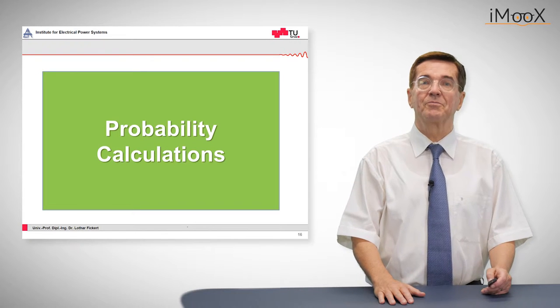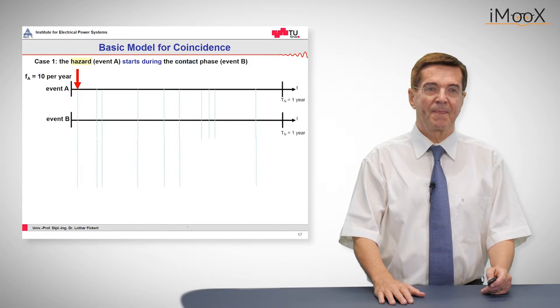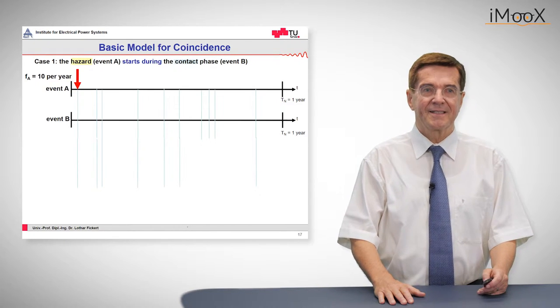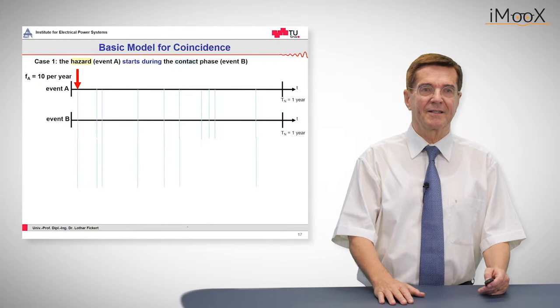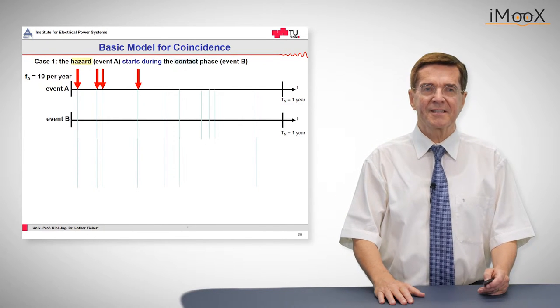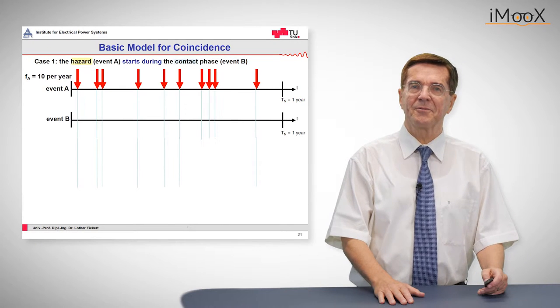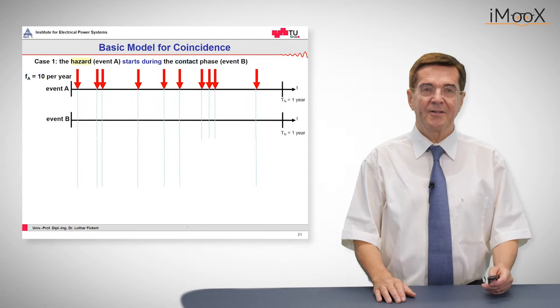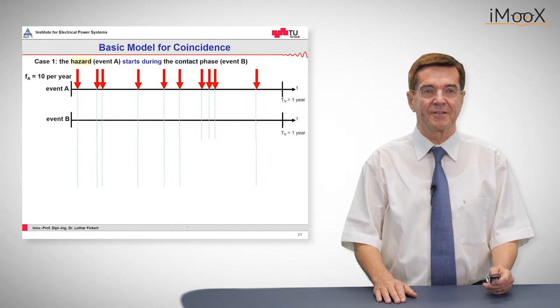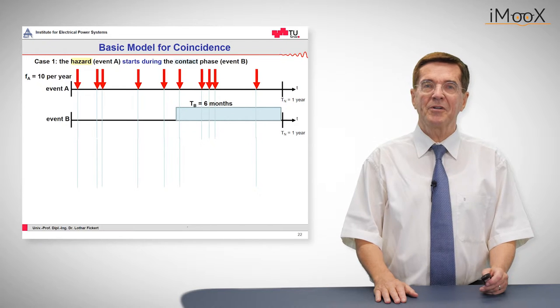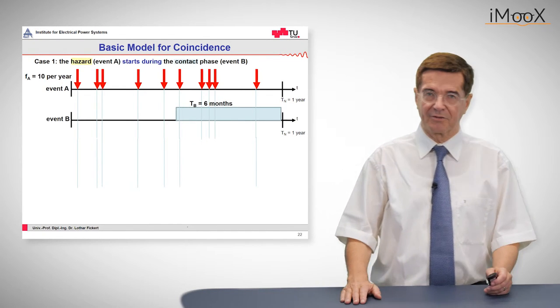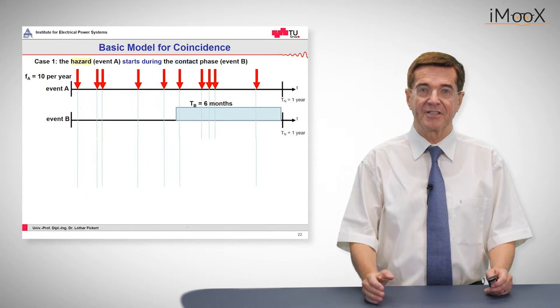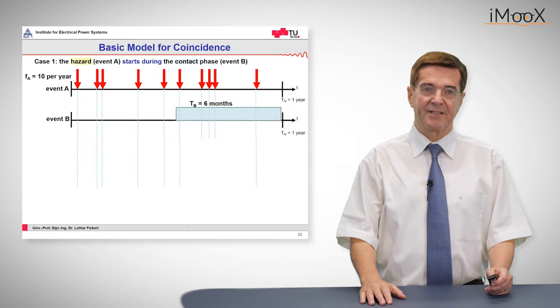Now a little bit about probability calculations. We start again with this case where the hazard sets in. This is the course of a year and we have for example 10 hazard situations. Now how about the event B, the contact situation. For example if a person is in contact with dangerous electrical equipment for six months, half a year, then 50% of the hazard situations will turn into dangerous situations.